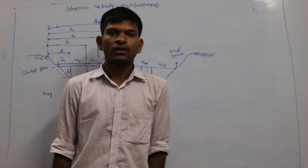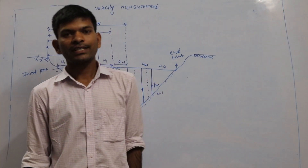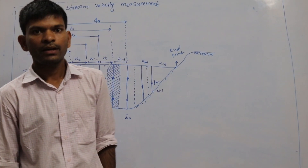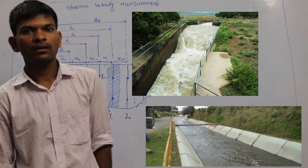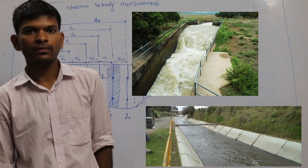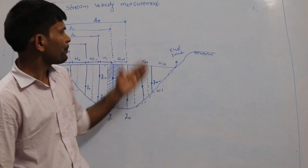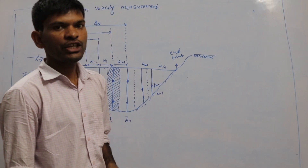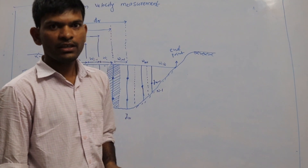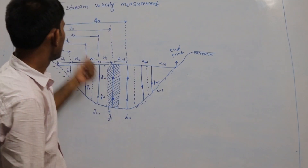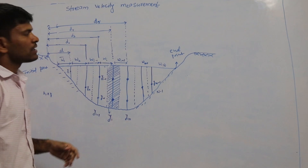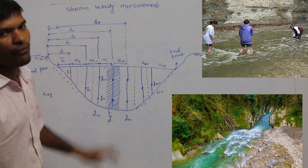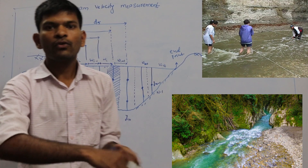Hello friends, today we will discuss velocity measurement in open channel or stream using the direct method and indirect method. Let us see the indirect method now. Stream velocity is nothing but the speed of water flowing in a river or stream.